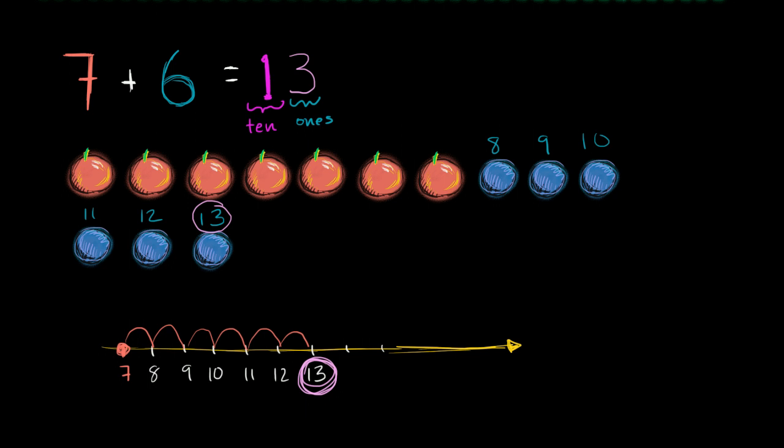And you see that right over here. So when I added the pieces of fruit, this right over here is one group of 10. So that's one group of 10. And so we had to add three to get to that one group of 10. And then, so we kind of filled that bucket. And then we had three more.